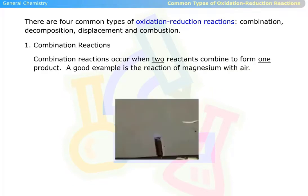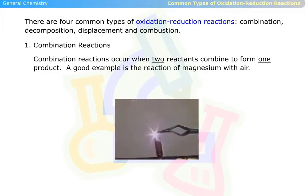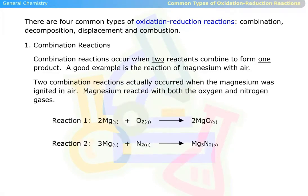Combination reactions occur when two reactants combine to form one product. A good example is the reaction of magnesium with air. Two combination reactions actually occurred when the magnesium was ignited in air — magnesium reacted with both the oxygen and nitrogen gases. These are the two reactions.